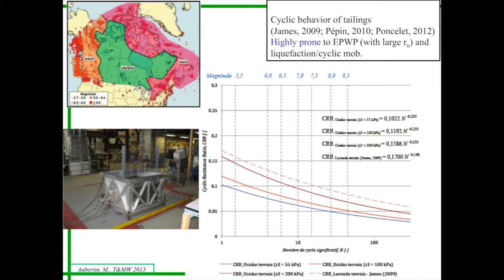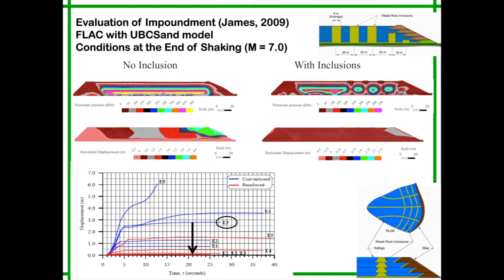We conducted a series of tests, direct shear tests, triaxial cyclic tests, and seismic tests on a shaking table. These results have been used to do some modeling work. We compared the design of an impoundment without inclusions to one with inclusions. This was part of the work of my colleague, Mike James. Various magnitudes of earthquakes have been assessed.